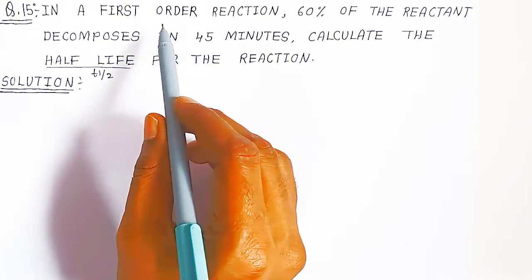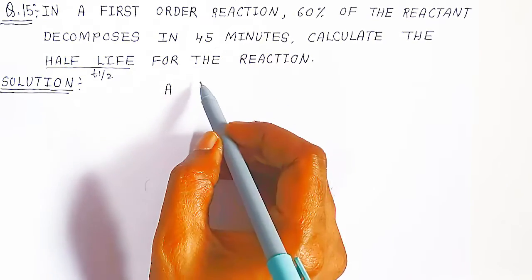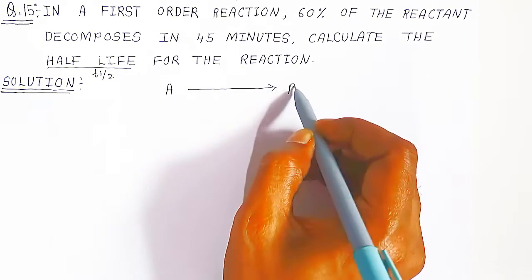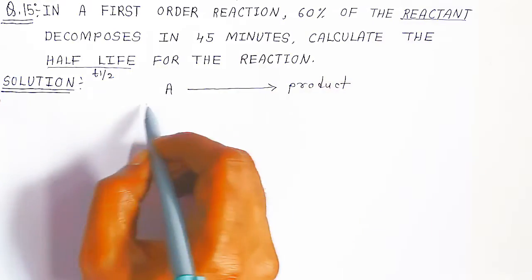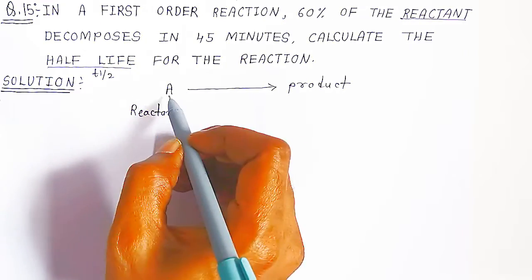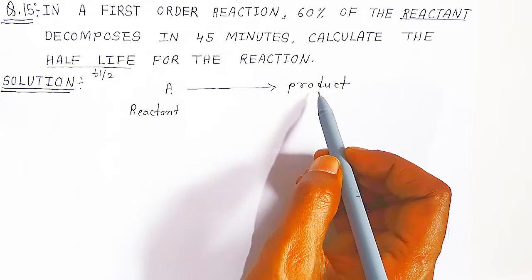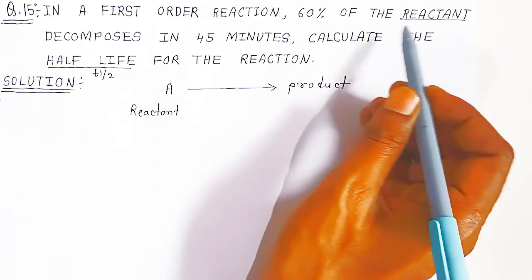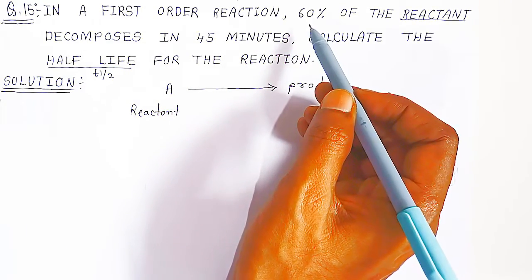So what is given? First, it is a first order reaction. We represent a general reaction: suppose we have taken reactant A, which is first order — meaning only one reactant — and it is forming the product. 60% of the reactant decomposes in 45 minutes, so the concentration is given in percentage.